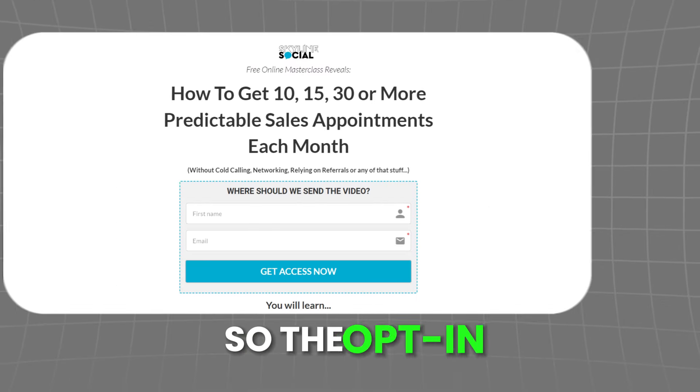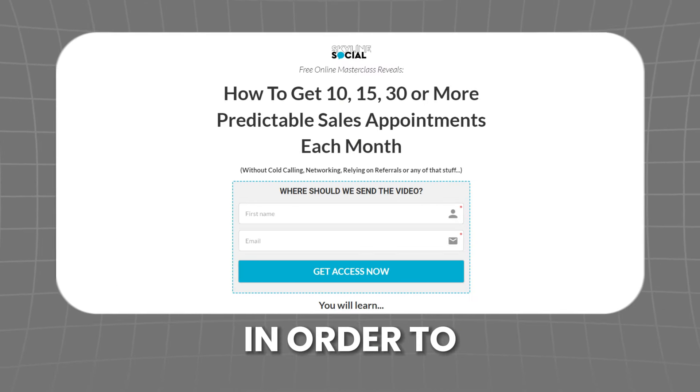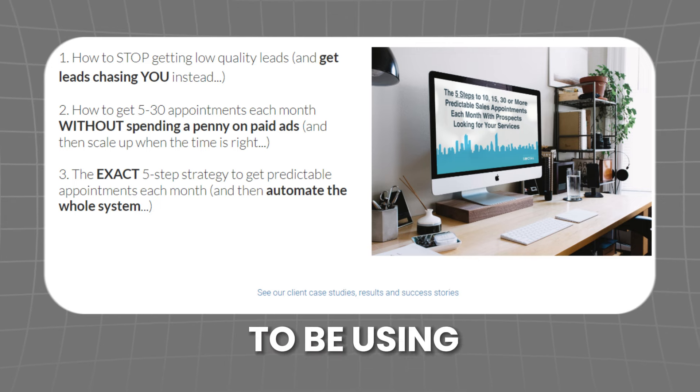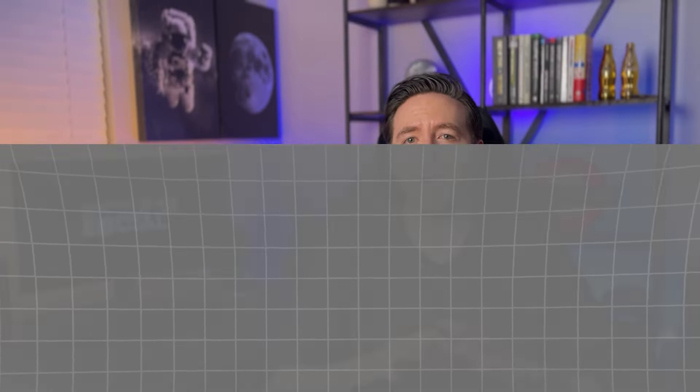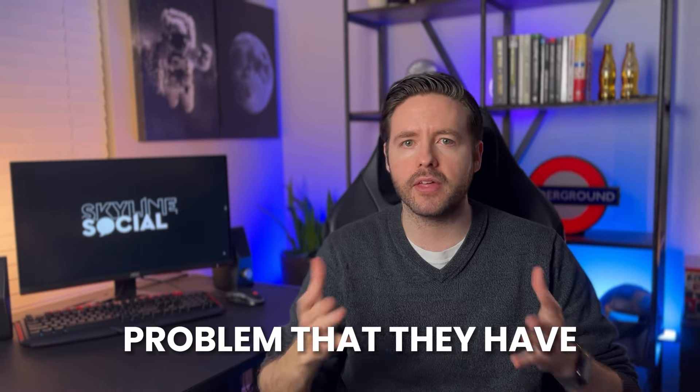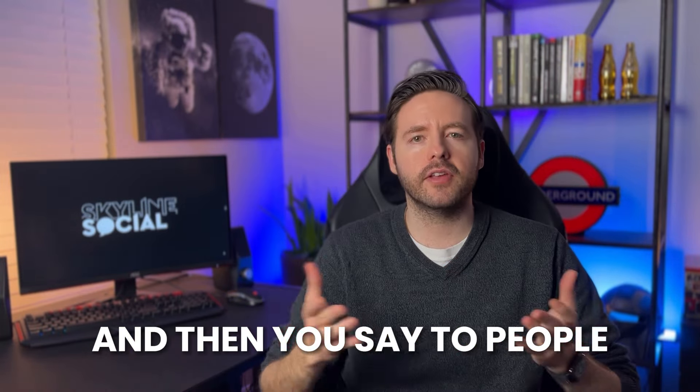Once you sign up for funnel building software, you can start building the different landing pages. The first page you need is the opt-in page — where people enter their name and email to opt in and get access to your lead magnet. For the automated appointment funnel, we're going to use a video sales letter as the lead magnet. I have a whole separate video on my YouTube channel covering how to create a high-converting opt-in page.